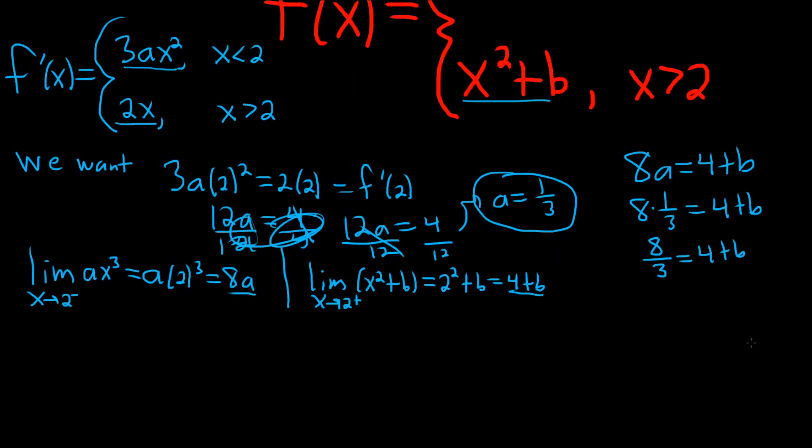This is 8/3 equals 4 plus b. Let's subtract 4 from both sides. So minus 4 minus 4. So we get b equals 8/3 minus 4. You can multiply this by 3 over 3 so that you have a common denominator. Now it will be 8/3 minus 12/3. So now your value of b will be negative 4/3.